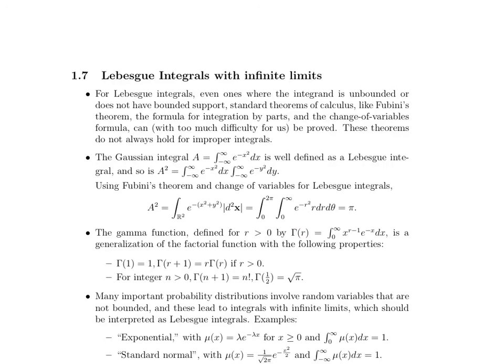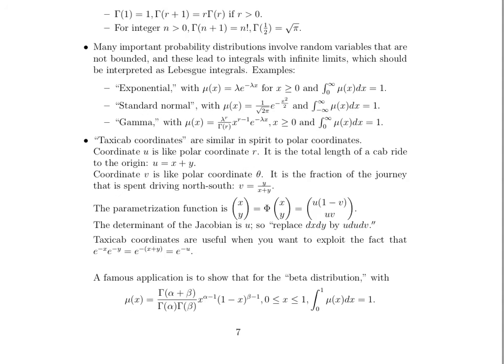And it's important to note that in statistics, there are many important probability distributions involve random variables that are not bounded, and so these lead to integrals with infinite limits, which can be interpreted as Lebesgue integrals, and should be. I mean, generally you don't end up computing very much of them by hand when you're actually in a statistics class, because they already have the values of the various integrals in tables and things like that. But here are some of the most well-known ones. One is the exponential function, and also the standard normal distribution. You guys, very, all my students are really into that one because they think that this is how we curve all our classes. And the gamma distribution as well, and so each of these, when they are integrated over these unbounded intervals, they evaluate to 1.